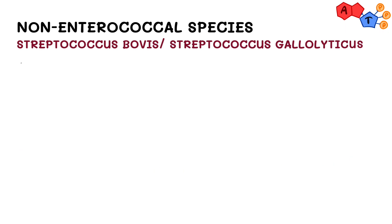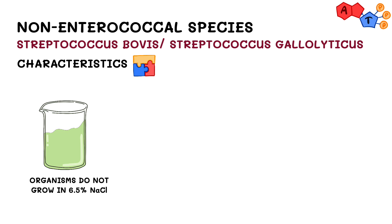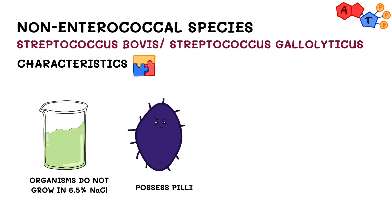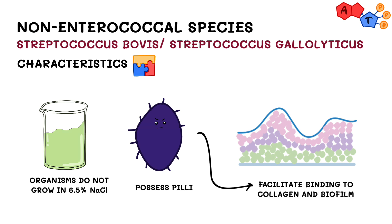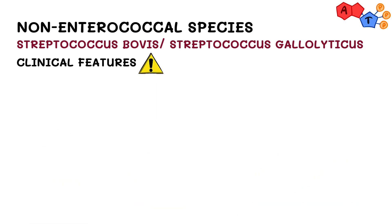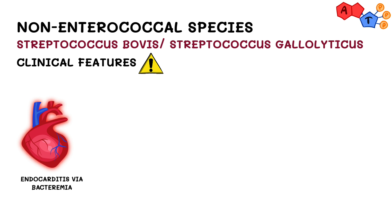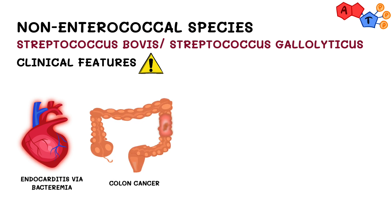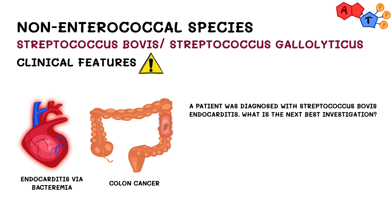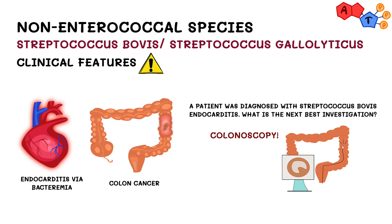Now, streptococcus bovis are the nonenterococcal gamma hemolytic strep, and remember — nonenterococcus does not grow in 6.5% sodium chloride. The main virulence factor for streptococcus bovis is the presence of pili that mediate binding, particularly to collagen and biofilms. Clinically, there are two key things to remember: it can cause endocarditis via bacteremia, and it is strongly associated with colon cancer. A common test question will describe someone with streptococcus bovis endocarditis and ask about the next investigation — the answer is colonoscopy, to rule out colon cancer.